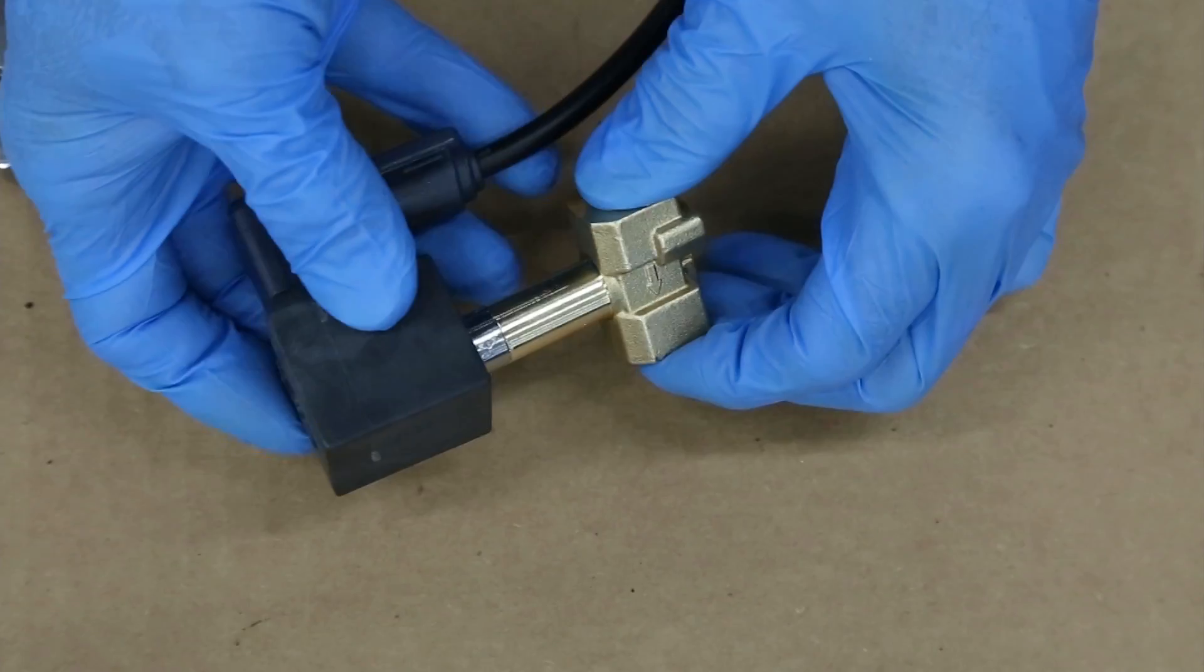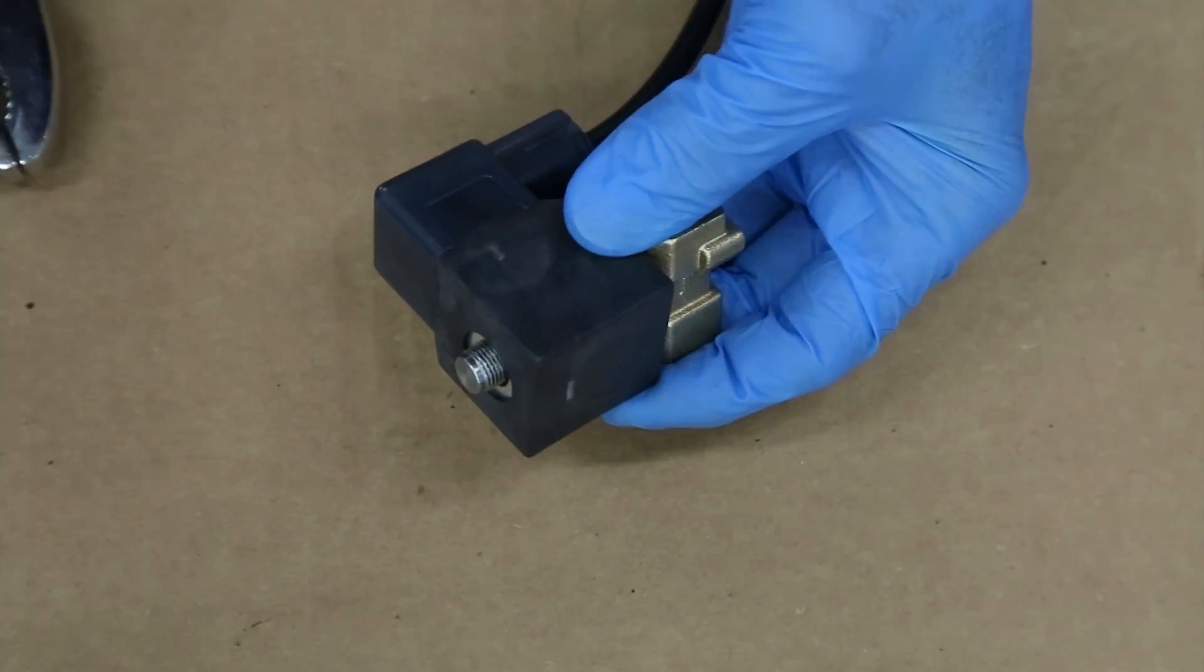Put the completed valve subassembly through the opening in the coil assembly. It only fits one way.